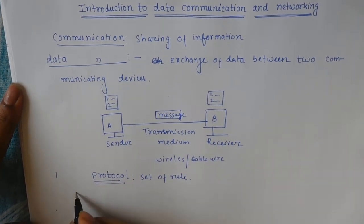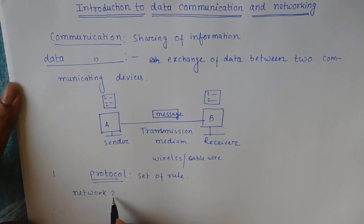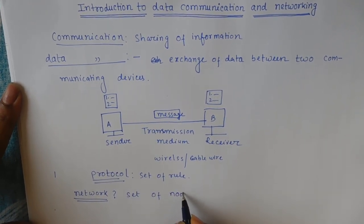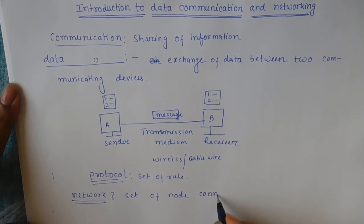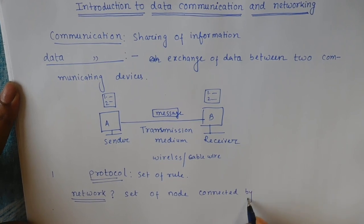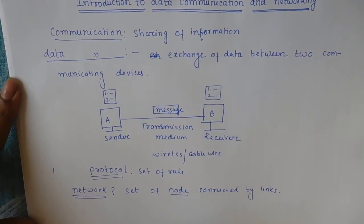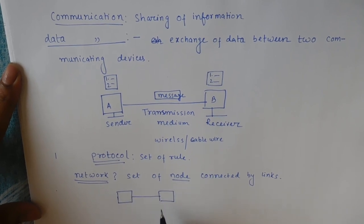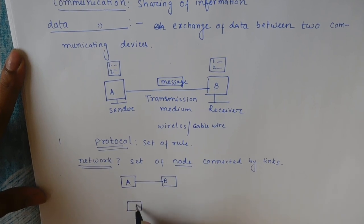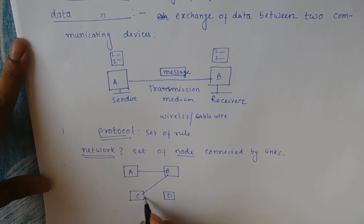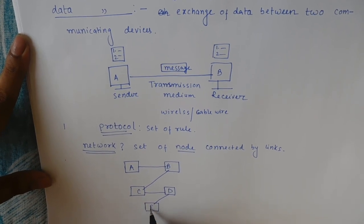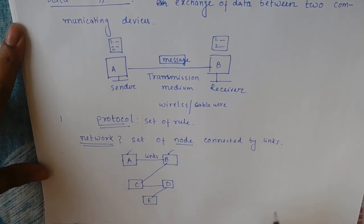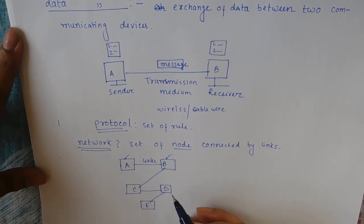Now, what do you mean by network? A network means a set of nodes connected by links. A node means any communicating device — your PC is a node, or a printer. Nodes A, B, C, D, and E are connected through links. A network defines the set of nodes connected through the links.